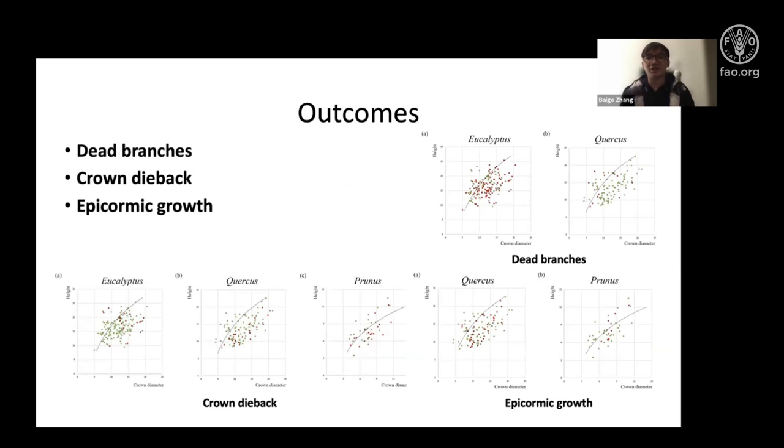For tree vitality, we tried to establish the relationship between vitality and tree size. At the right hand, we can see the diagrams. For eucalypts, trees with dead branches are often under the growth curve. That means they have a smaller size than prediction, but such relationship is not so evident for Quercus, so that means there's a species difference.